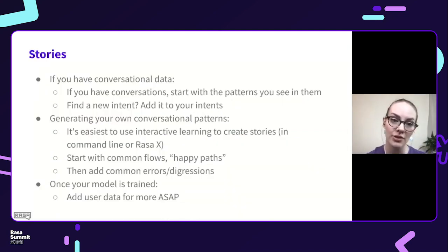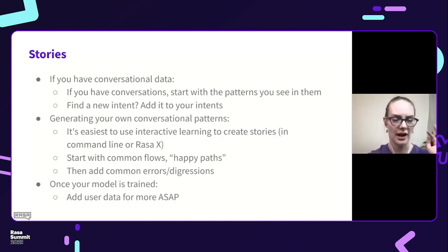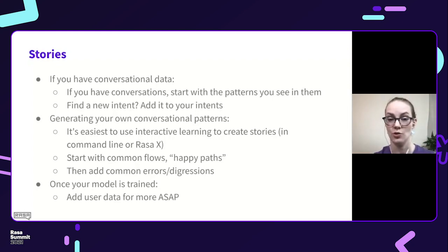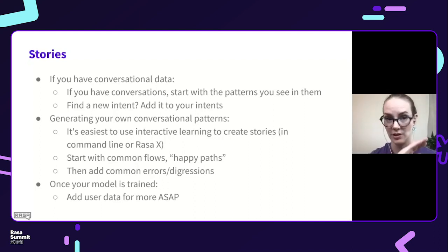Where do you get stories? If you have conversational data, start with the patterns you see there — the things you want your assistant to do. When you find a new intent or a pattern you see a lot in your conversational data, add that to your intents and go through the previous steps. For generating new conversational patterns, my recommendation is to use interactive learning — where you talk with your Rasa assistant, annotate and correct classifications throughout the conversation, then save that as training data and retrain. Start with the most common things you want people to be able to do, then add errors that you see or think might come up. And as soon as your assistant is actually usable, get it in front of users — they could be test users on your team. You're never going to be able to guess all the things somebody might want to do, so user data is top. If you do need more complex conditional logic, then you can start looking at rules — but I wouldn't start with rules.